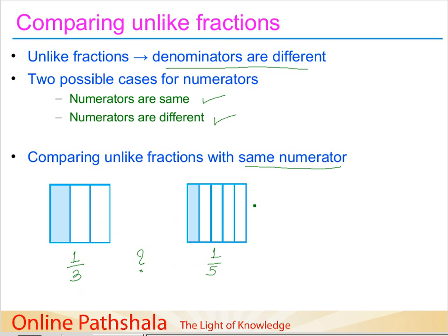In figure 2, the same whole square is divided into 5 parts. When you divide the same quantity into more parts, each part will be smaller in size. So when comparing 1 part out of 5 versus 1 part out of 3, the answer is obvious: 1 part out of 3 is greater than 1 part out of 5. Therefore, 1/3 is greater than 1/5.